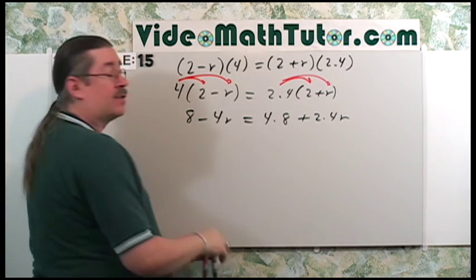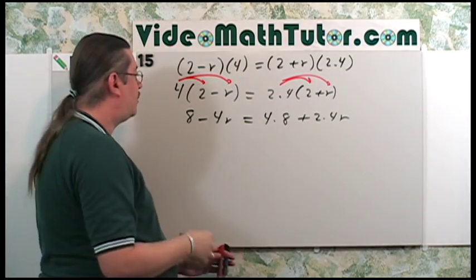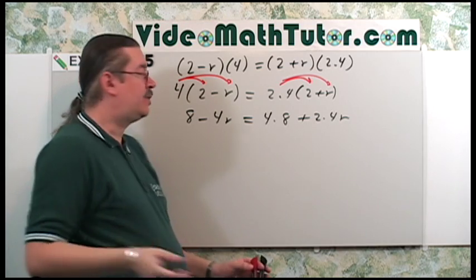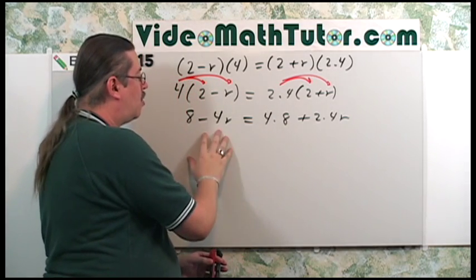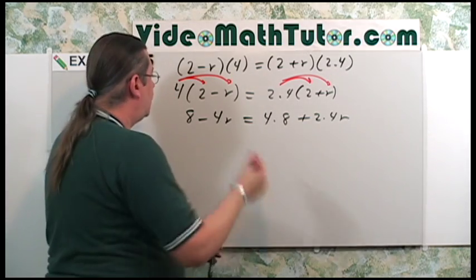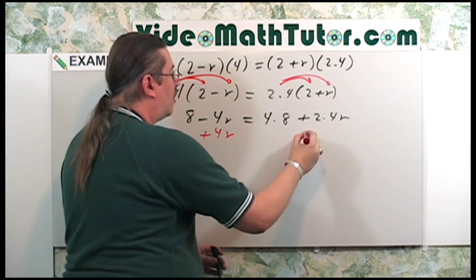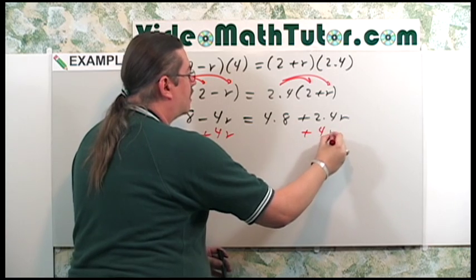Now, to continue solving, if you have variables on one side and variables on the other side, you want to combine them. And what I've always taught you was always put the ones with the smaller coefficient to the side where the larger coefficient is. This way you avoid negatives. So I'm going to add 4r to both sides of the equation.